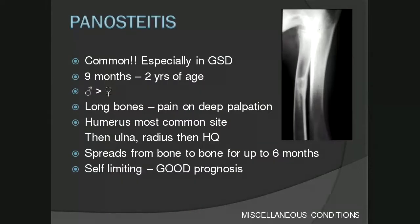Panosteitis is very important to differentiate in young animals presenting with painful limbs, because other common conditions such as hip dysplasia and elbow dysplasia often occur in the same group of animals and need to be differentiated. Panosteitis is quite common especially in the German Shepherd dog — again a breed commonly affected by elbow and hip dysplasia, making differentiation important. Ages affected are usually nine months to about two years, though some texts describe it occurring up to seven years.